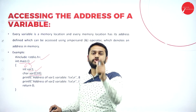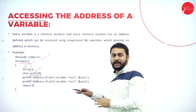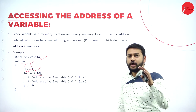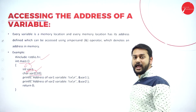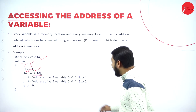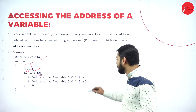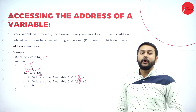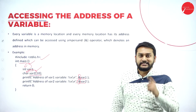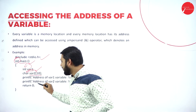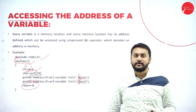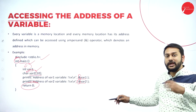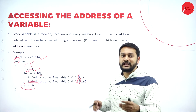I also have an array named var2 of type char. Moving forward, I use printf to print the address of variable_one and var2 using the ampersand symbol. This is a program that helps us understand how to print the address of a variable.